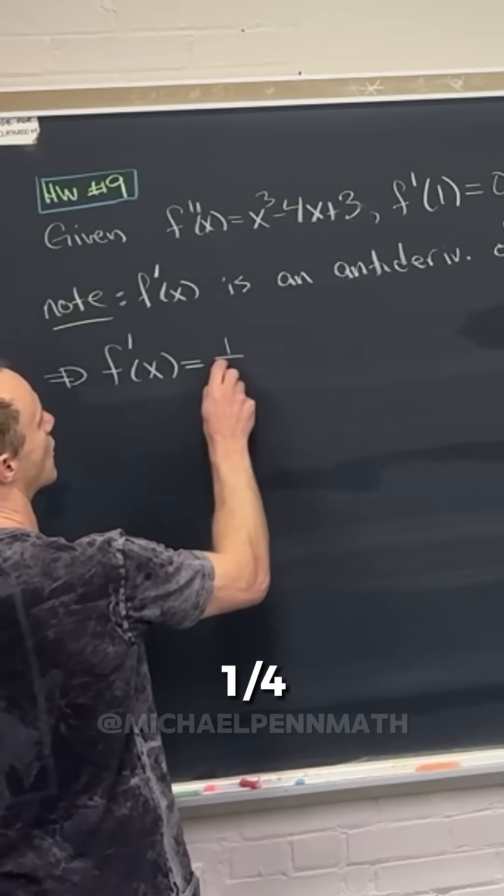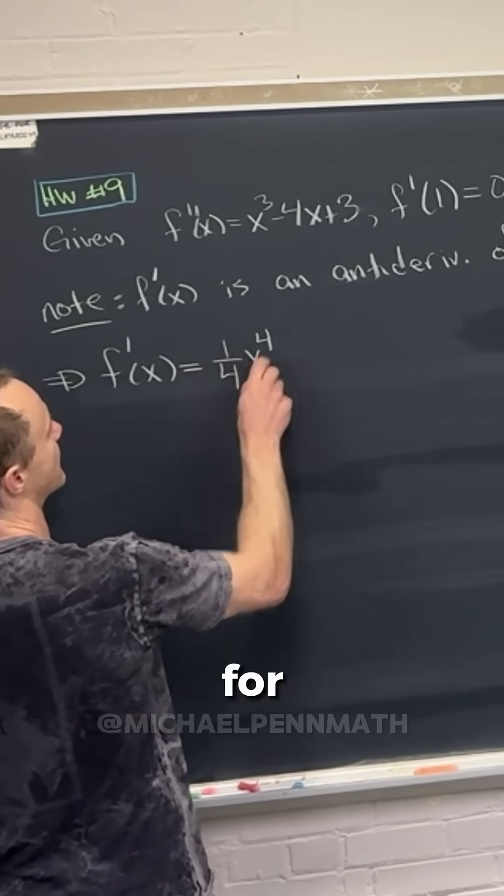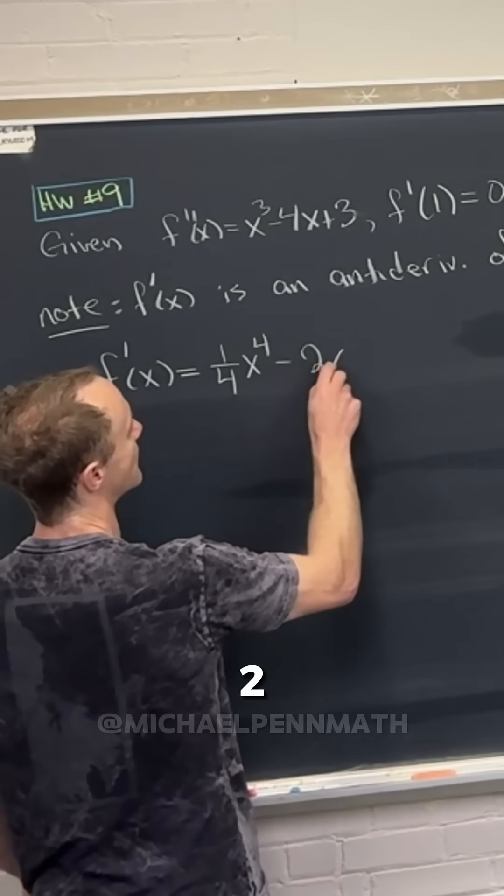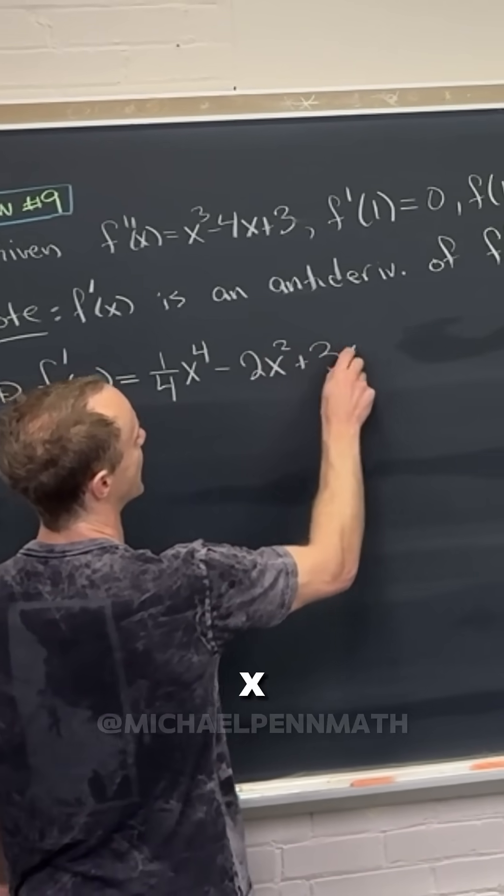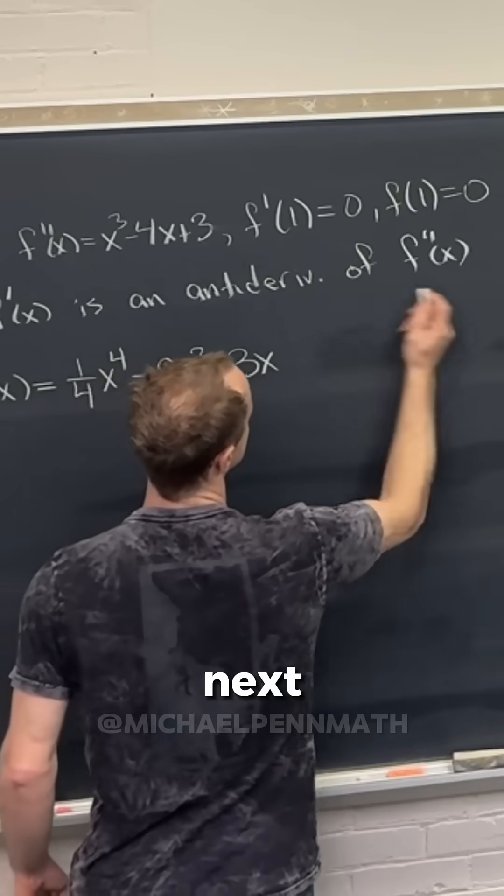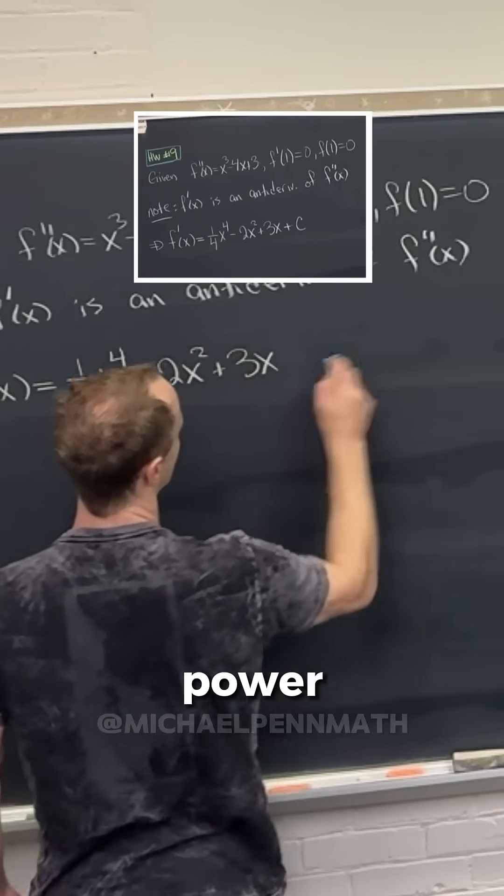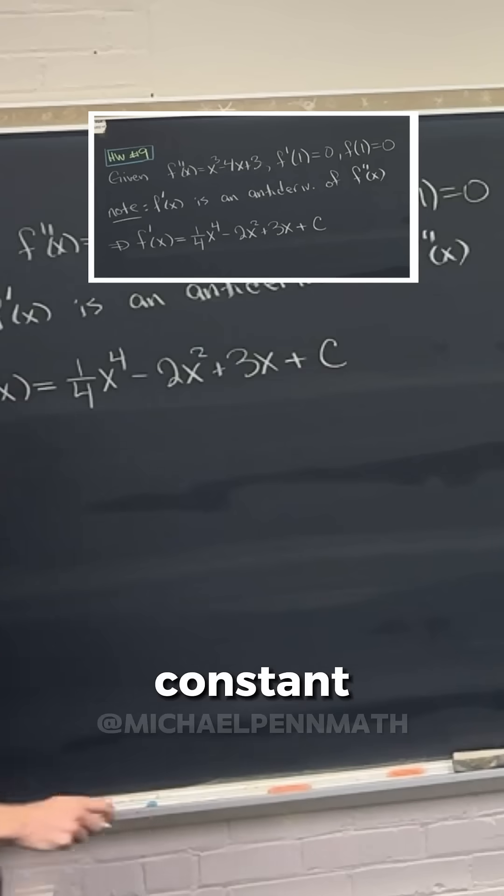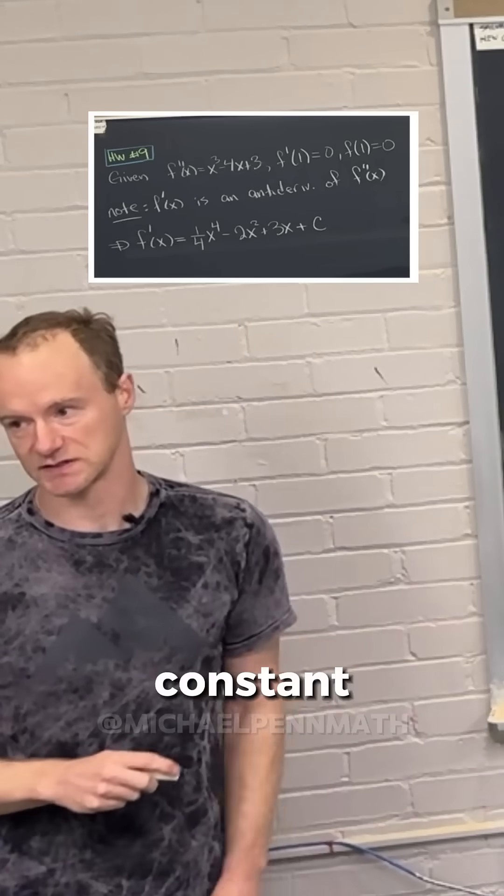We'll have a quarter x to the fourth for the first term, then minus 2x squared plus 3x for the next two terms, again using the power rule, plus a constant c.